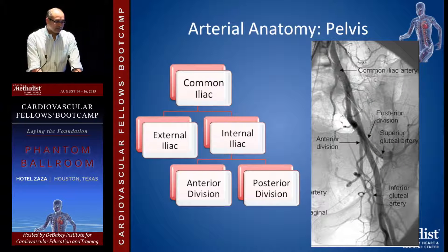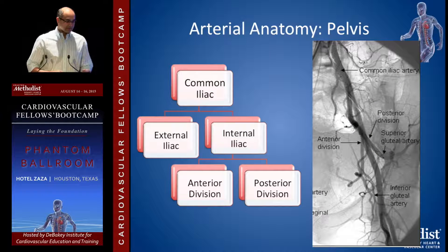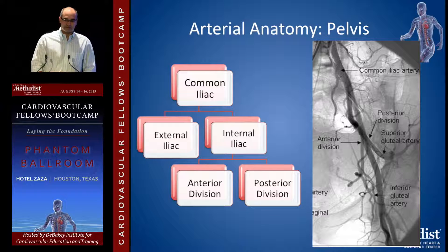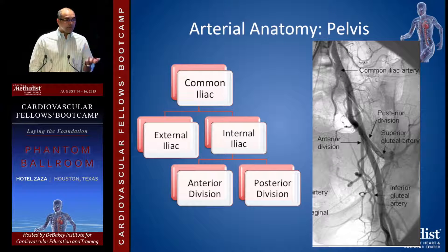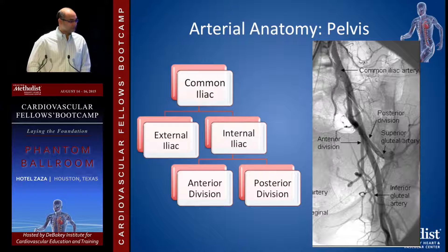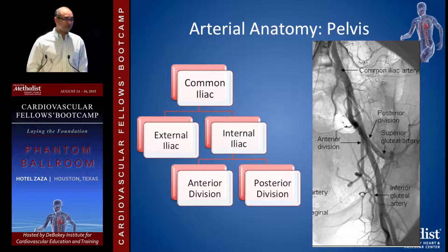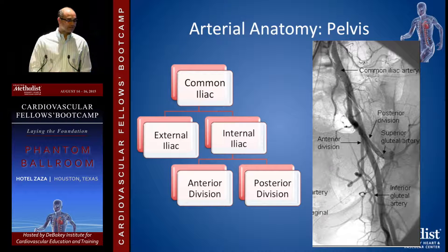The common iliac artery becomes external and internal. The internal iliac has a pretty important role in the pelvis — it has an anterior division and a posterior division that gives rise to the gluteal arteries and the uterine arteries. It's important to know not just what bifurcates into what, but also what helps if things don't go right.